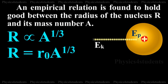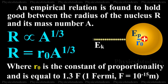R is equal to R naught A raised to 1 by 3, where R naught is the constant of proportionality and is equal to 1.3 Fermi. F is equal to 10 raised to minus 15 meters.